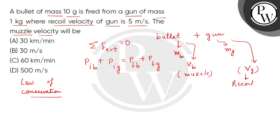So, we can put this in the equation. Before firing, both of the linear momentum will be zero, and after firing, we can take mass of bullet, velocity of bullet, plus mass of gun, velocity of gun.